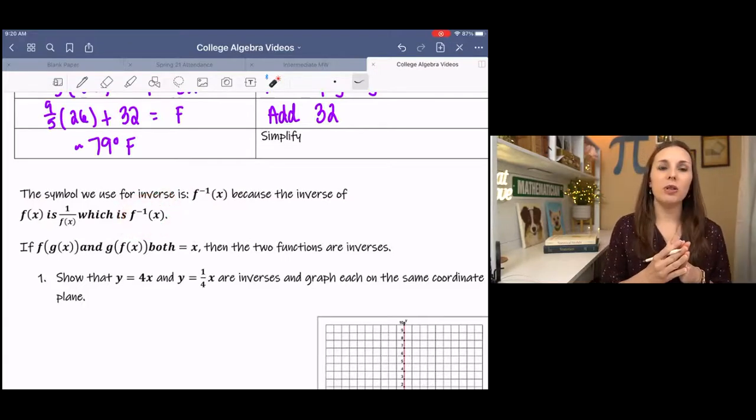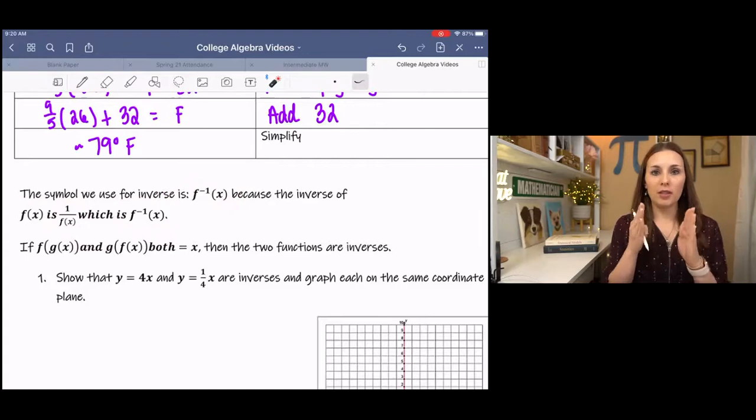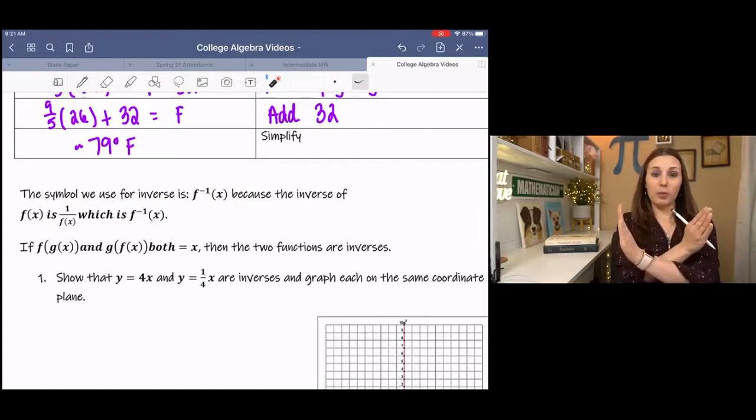So if you're given, for example, a table of values, and you have X and Y, and you want to find the inverse, all you have to do is flip X and Y. It's pretty simple with a table.